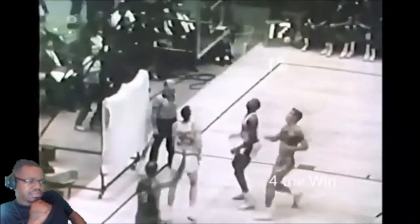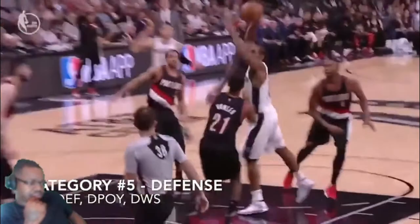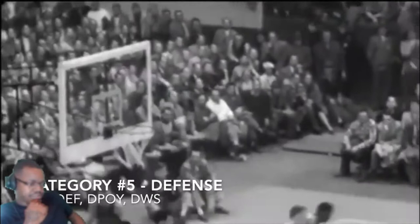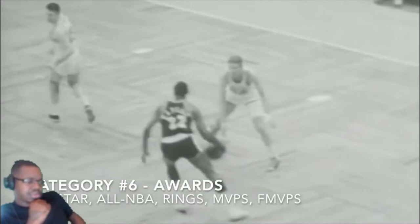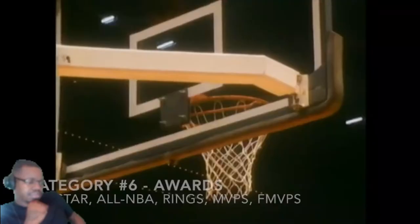The efficiency and advanced metrics category is defined by career true shooting percentage and win shares per 48, both regular season and playoffs. True shooting percentage is used because it's fairer to guards — field goal percentage is biased toward big men who play closer to the basket. Win shares per 48 encompasses efficiency along with other attributes. Defense is defined by all-defensive selections, defensive win shares, and Defensive Player of the Year awards. Blocks and steals are excluded because those stats weren't tracked for players in the 1960s and early 1970s.